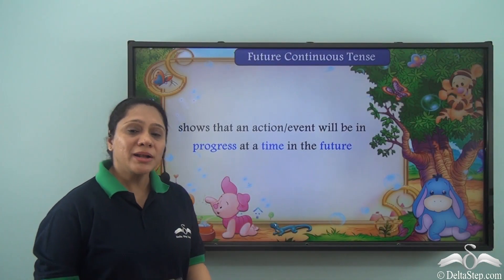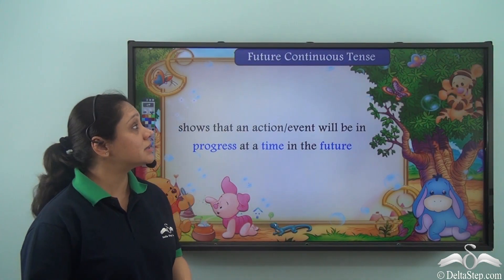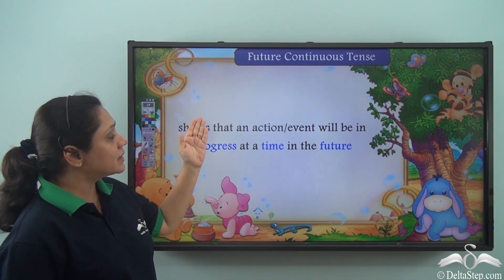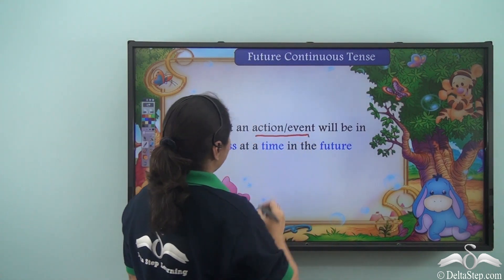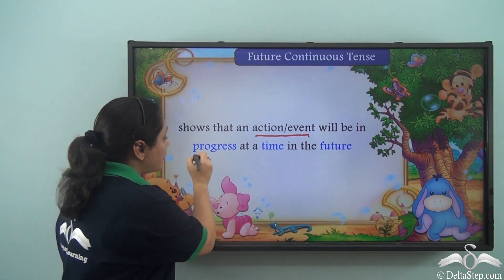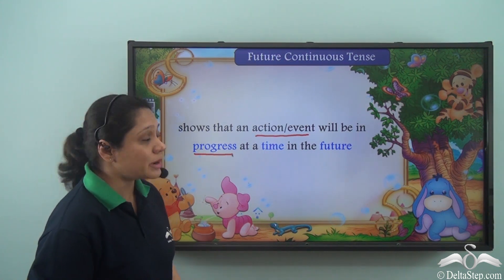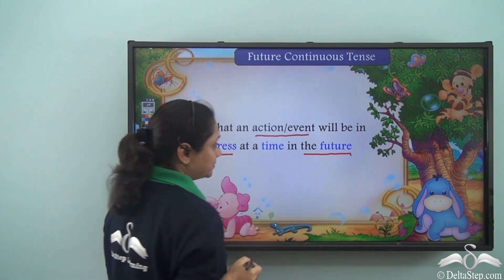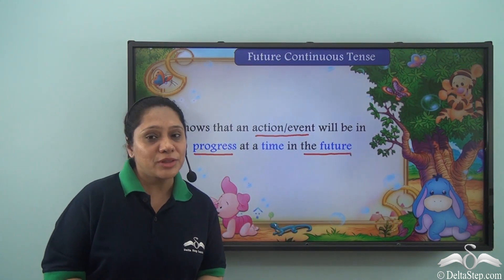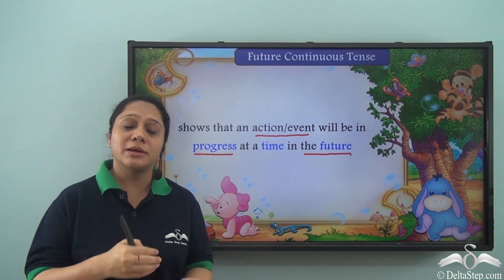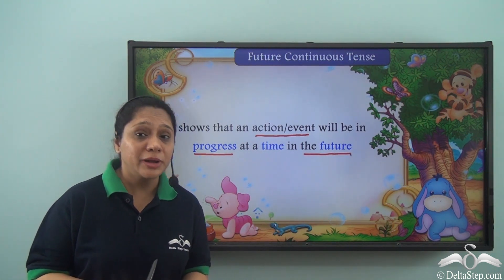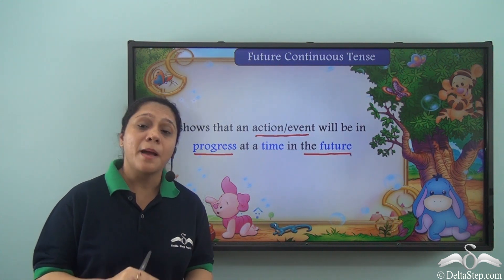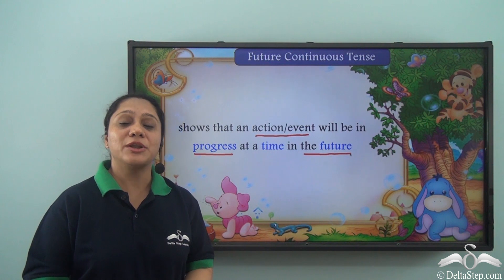So what have we learnt today? We have learnt that the future continuous tense shows us that an action or event will be in progress — it will be continuous — at a time in the future. You have now learnt about the simple tenses and the three types of continuous tenses: present, past, and future. You will soon learn about more.